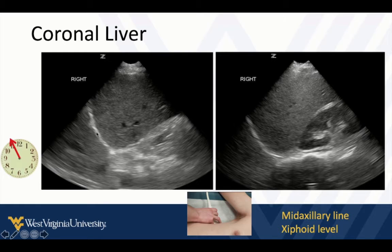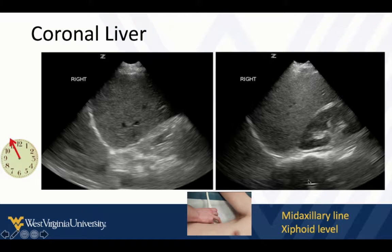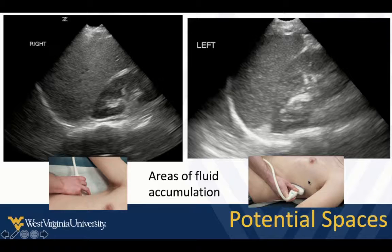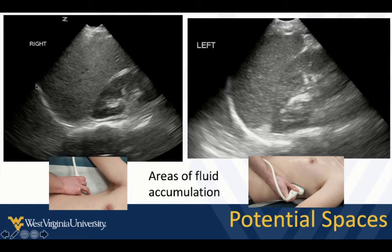We see the diaphragm here. We don't really see anything going on in the lung if it's normal, and then as we move down and fan up or down, we may identify Morrison's pouch here. These are potential spaces under the diaphragm or in Morrison's pouch on the right. On the left side it looks fairly similar with the spleen. The potential spaces are here: Morrison's and sub-diaphragmatic.